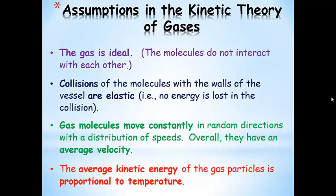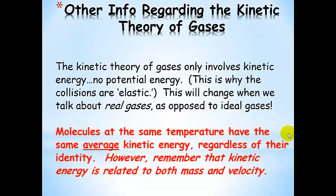Overall, molecules have an average velocity. The average kinetic energy of gas molecules is proportional to the temperature — temperature is a measure of the average kinetic energy. The kinetic theory of gases involves only kinetic energy, no potential energy. This is why collisions are elastic: nothing interacts with anything else. This will change when we talk about real gases, where there will be potential energy in the picture.